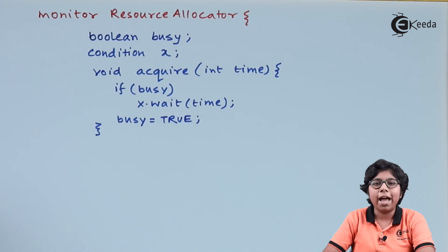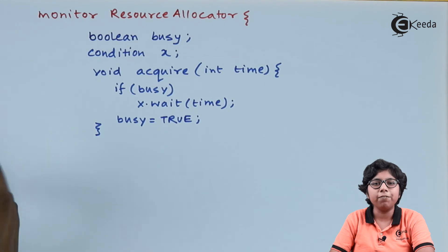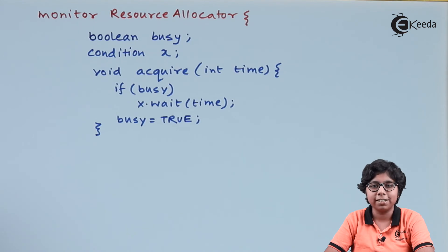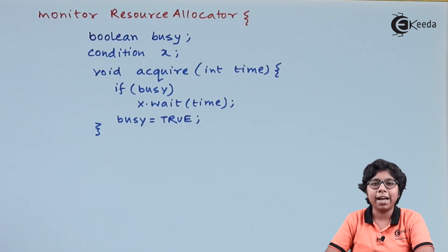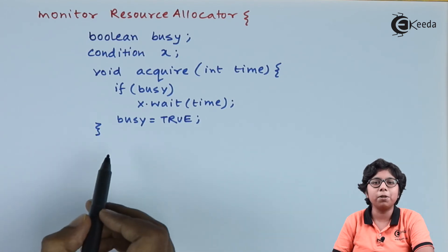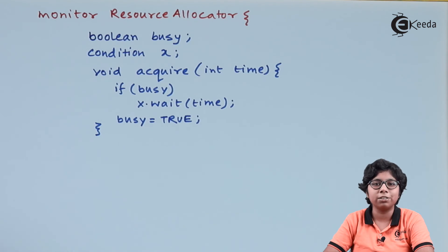Now in the acquire function, we are checking that if busy is true, that means the resource is used by another process, and that condition variable has to wait on that process. So we are using x.wait(time), the time which is allocated with the request for resources. And if it is not busy, then the process can acquire the resource and get busy into it.